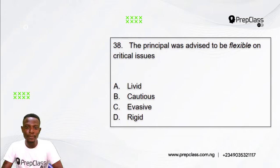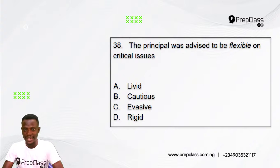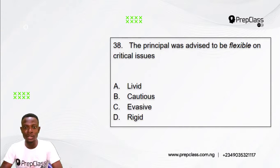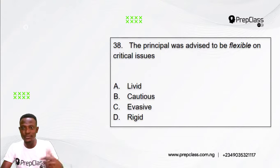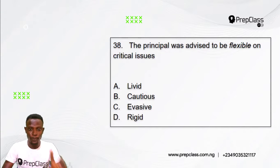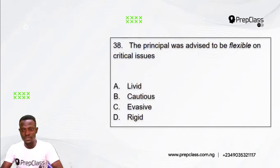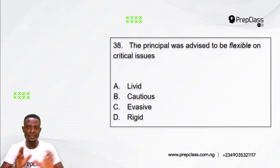Question 38: The principal was advised to be flexible on critical issues. The word in italics here is 'flexible.' Options: A) Livid, B) Cautious, C) Evasive, D) Rigid. Which of these options is the opposite meaning to 'flexible'?